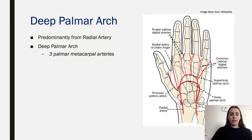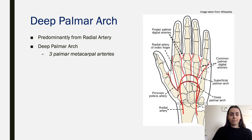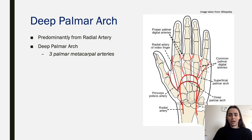Now following the deep palmar arch: we've covered the superficial palmar arch coming from the ulnar artery, and now the deep palmar arch, which sits further posteriorly in the hand. As stated, it comes predominantly from the radial artery. It forms three branches as three palmar metacarpal arteries, which run along the metacarpal bones. These then contribute to the branches of the digital arteries from the superficial branch as well, forming the proper digital arteries.